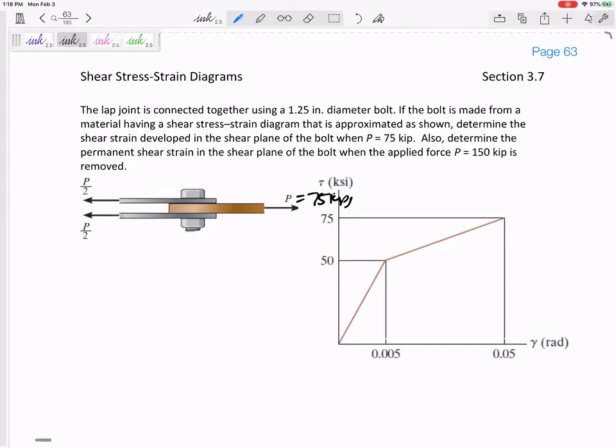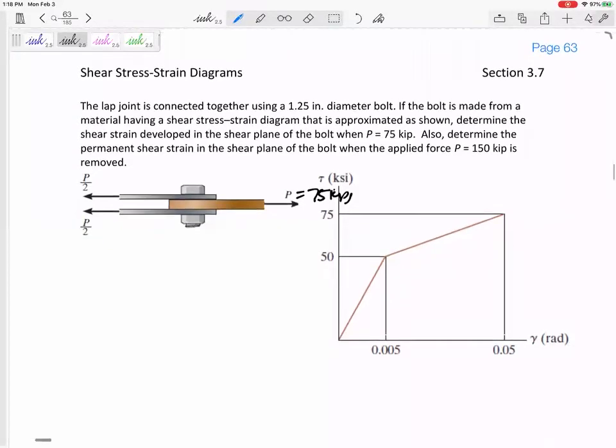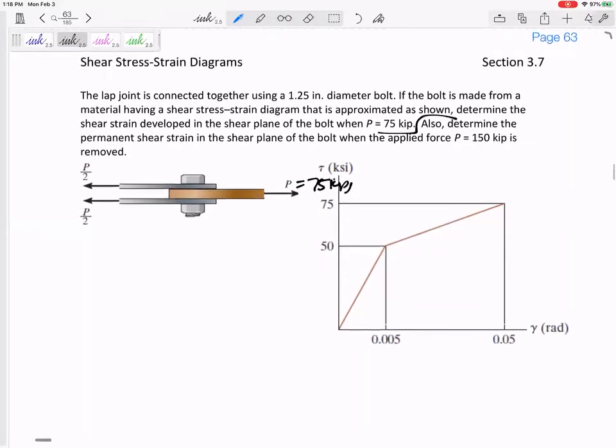If P is 75, determine the permanent shear strain when - sorry, two separate problems. First determine the shear strain development when P is equal to 75, then we're gonna figure out what happens when P is equal to 150. When P is equal to 75, where is that on this stress-strain diagram? It is not just at 75. This right here is the stress. They gave us a force, we've got to calculate the stress.